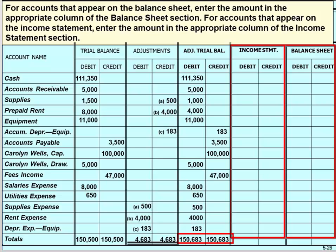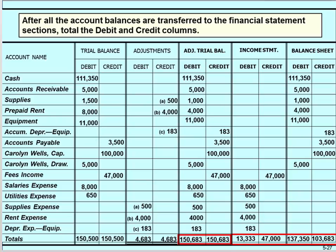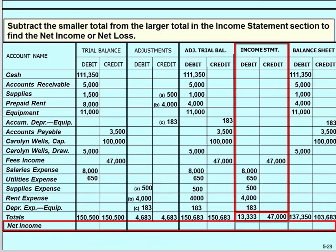Now we move to the final steps of completing the worksheet. Transfer the accounts which belong on the balance sheet to the balance sheet section, and transfer the accounts which belong on the income statement to the income statement section. Only assets, liabilities, and the owner's capital account belong on the balance sheet. Revenues and expenses belong on the income statement. The drawing account is an exception — it is moved to the balance sheet section even though it ultimately appears on the statement of owner's equity. After all balances have been transferred, foot the four columns. The totals of the income statement and balance sheet sections will not yet balance.